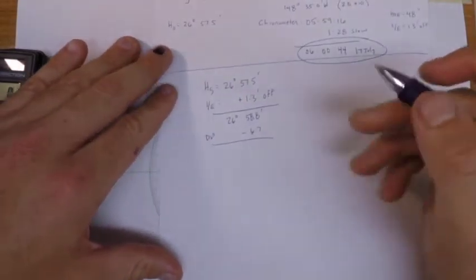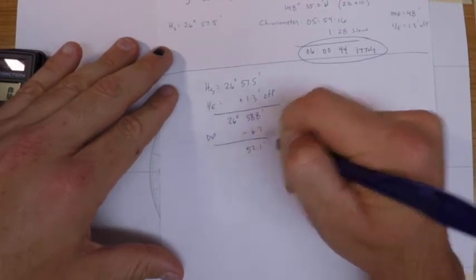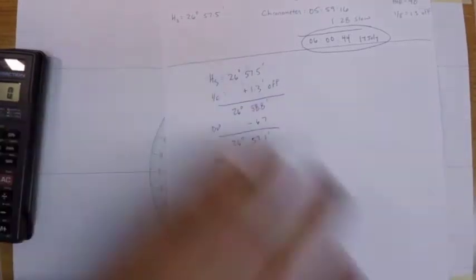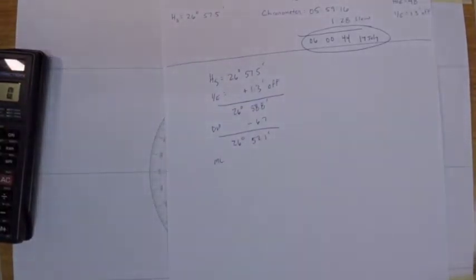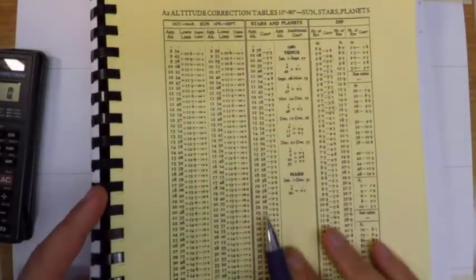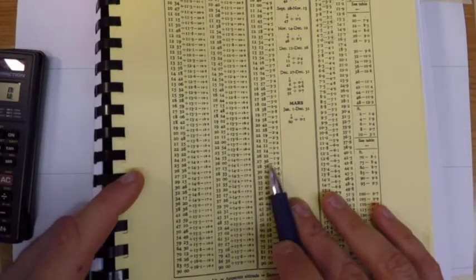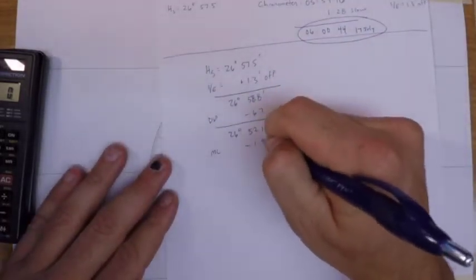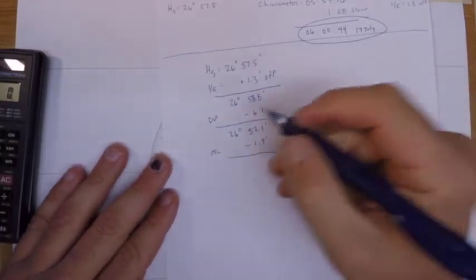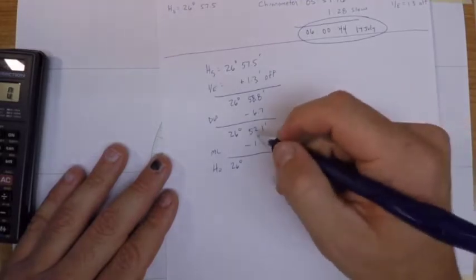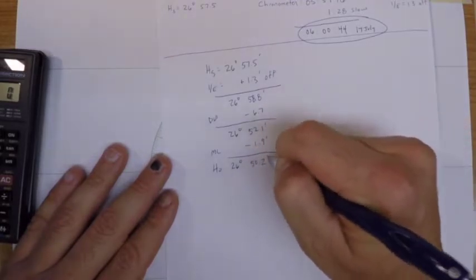If we do that out we get 52.1 minutes, 26 degrees. Then finally our main correction or altitude correction. I remember we're using Polaris here and not the Sun, so just make sure we're in the right table. So I'll pull out an altitude correction there of negative 1.9. Our final HO is going to be 26 degrees and 50.2 minutes.